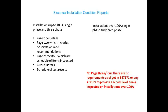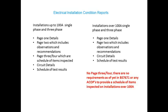The other reports available are for installations over a hundred amps. The content is exactly the same as before, with one significant change: as of yet there are no requirements in BS 7671 or any associated codes of practice to provide a schedule of items inspected on installations over a hundred amps. So there are no requirements to provide a tick sheet.